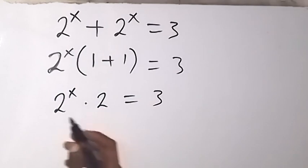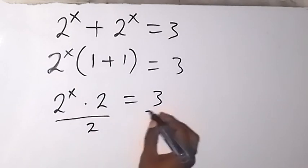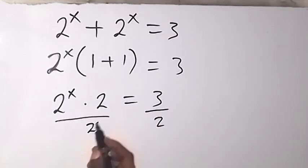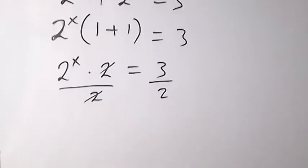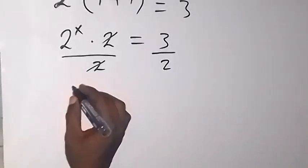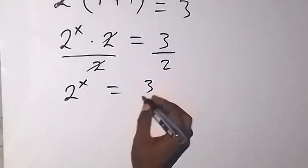So we can remove this 2 on this side by dividing both sides by 2. We cancel 2 on this side. So we are left with 2 raised to power x, which is equal to 3 over 2.